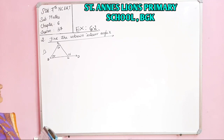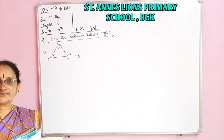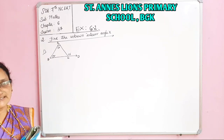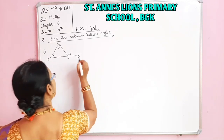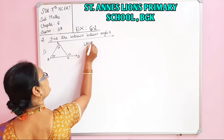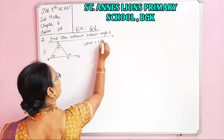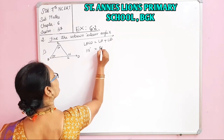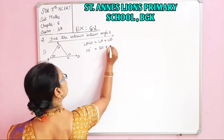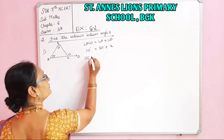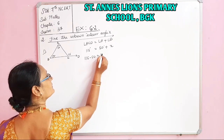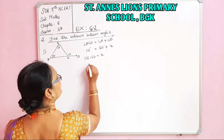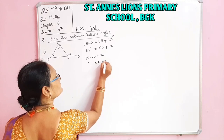Second part, first one. See — now here the interior angle is X. In the first part the exterior angle was X; here the interior angle is X that we have to find out. Angle ACD is equal to Angle A plus Angle B. ACD is 115 degrees, Angle A is 50 degrees plus Angle B is X. So 115 minus 50 equals X. Therefore X is equal to 65 degrees.